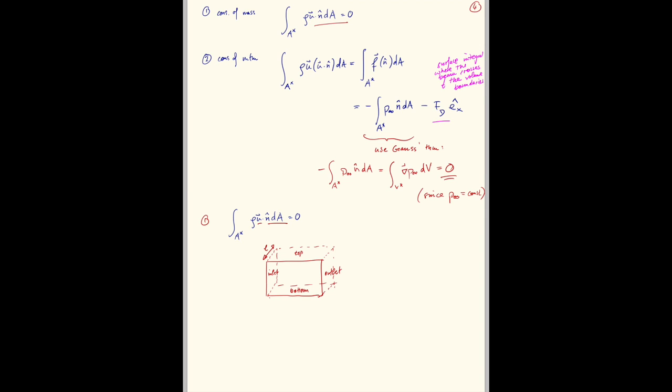So for equation 1, the first integral is the inlet. And it is rho u infinity times n dA, which in this case is just L dy. And the length L is constant, and u is constant into the page. So it's just L times the integral over dy. And then we have a minus sign for the outlet because the normal points in the opposite direction.